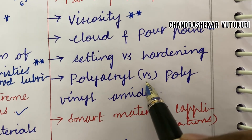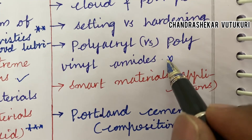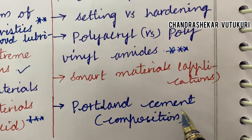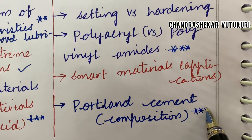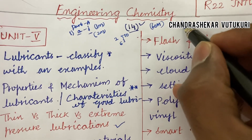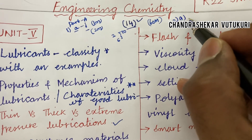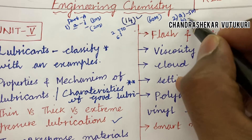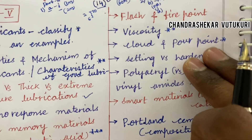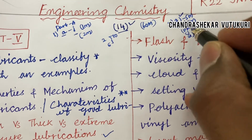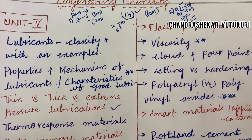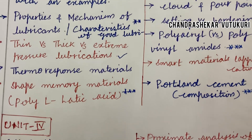Setting versus hardening, and polyacrylic versus polyvinyl, may be a short or long question. Smart materials and their applications for 5 marks, and Portland cement along with its composition, are topmost questions. Do not expect a direct 10-mark question — it means a combination of 5 and 5 split. You may get AB or CD options. I have also done a video on the question paper pattern, please go through it, which I will post in the comment section.